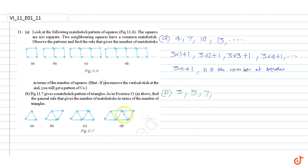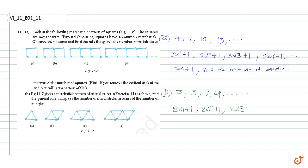The third triangle has 7 matchsticks and the fourth triangle has 9 matchsticks, and so on. This can be written as 2×1+1, 2×2+1, 2×3+1, and 2×4+1, and so on. So the general rule that gives the number of matchsticks in terms of the number of triangles is...